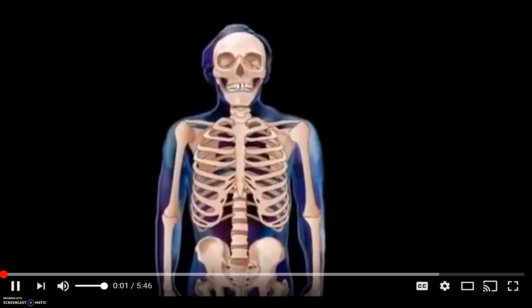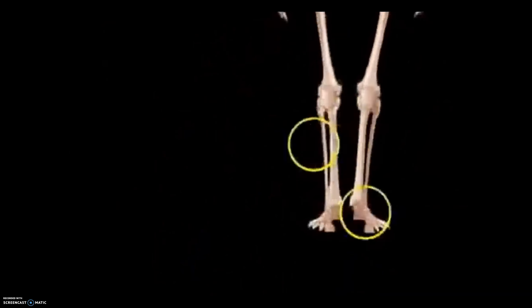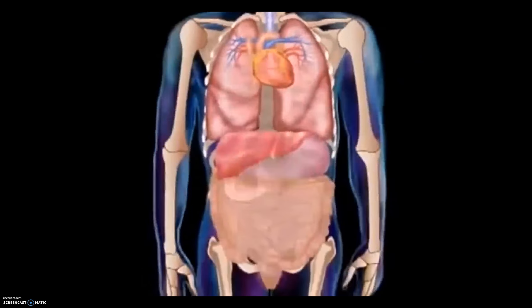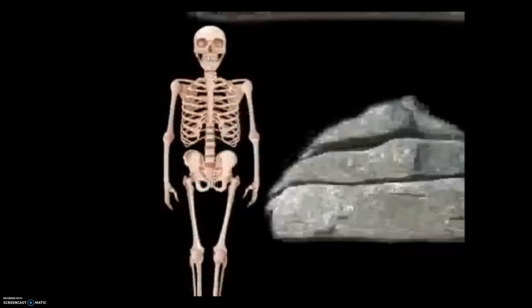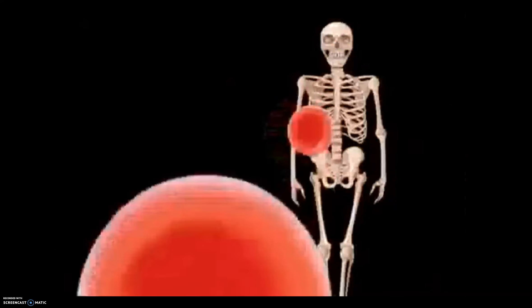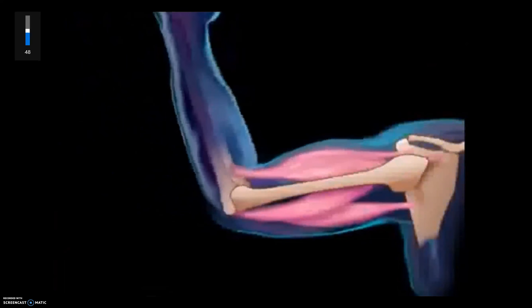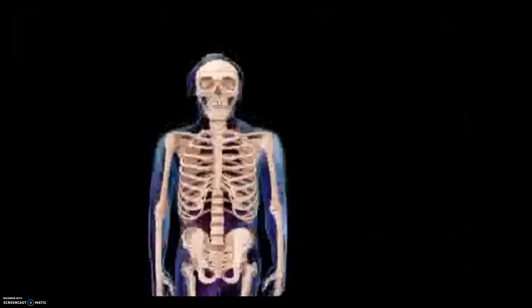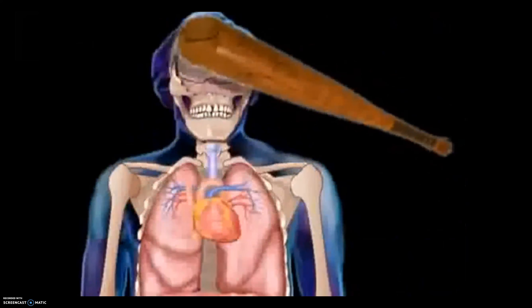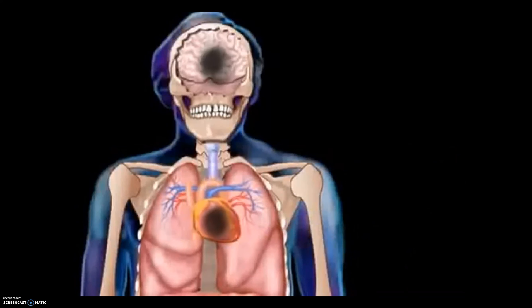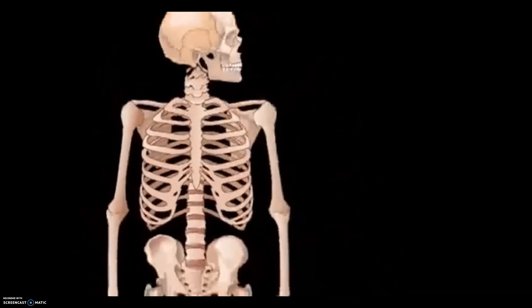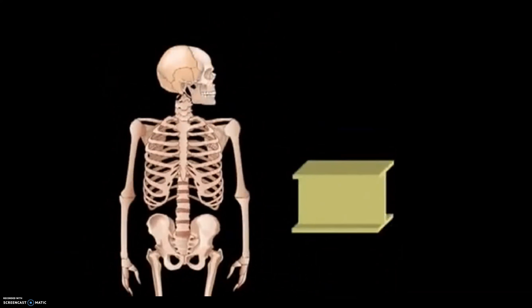The skeletal system includes all the bones of the body plus the joints where they attach to each other. Our skeleton protects our internal organs, provides a framework or scaffolding that allows us to stand upright and move, stores minerals that our body needs to function properly, and produces blood cells. Our muscles pulling on our bones produce movement, and without the protection of our skeleton, even a simple bump on the head or chest could injure vital internal organs. Pound for pound, the bones of the skeletal system are stronger than steel.